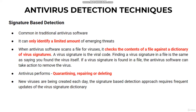Finding a virus signature in a file is the same as saying you found the virus itself. If a virus signature is found in a file, the antivirus software can take action to remove the virus. Antivirus software will usually perform one or more of the following actions: quarantining, repairing, or deleting. Quarantining a file will make it inaccessible and is usually the first action antivirus software will take if a malicious file is found.